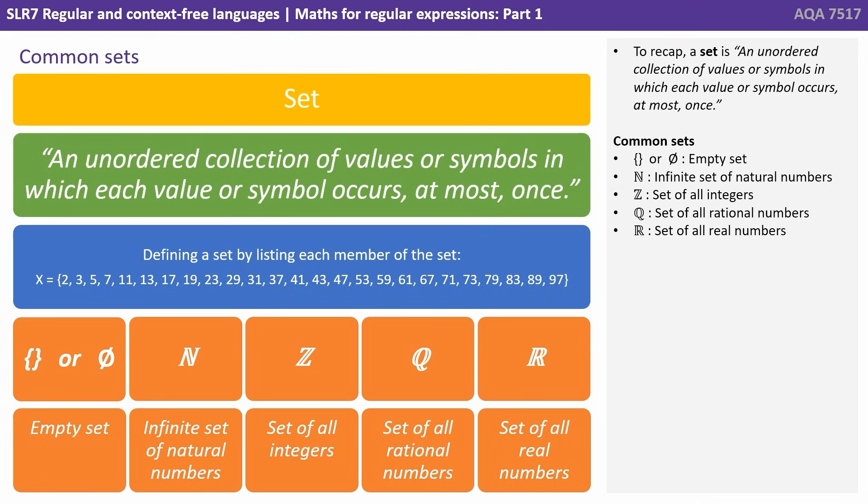So to recap, a set is an unordered collection of values or symbols in which each value or symbol occurs at most once. And there are a number of common sets with their shorthand, which you need to be aware of, which is shown here.